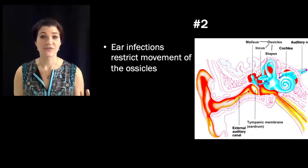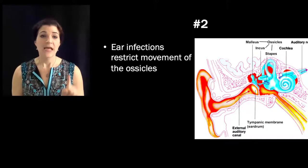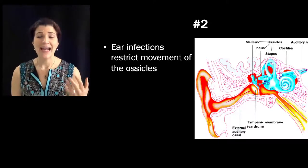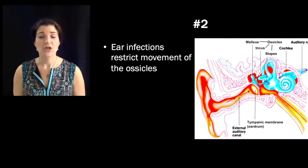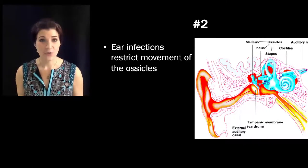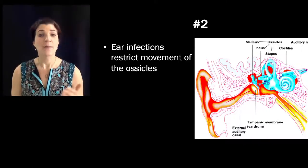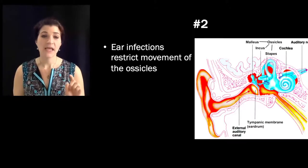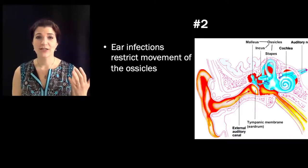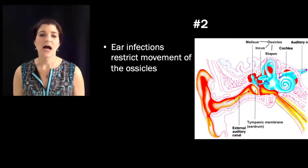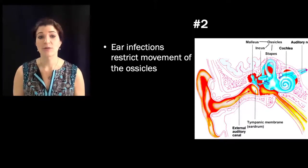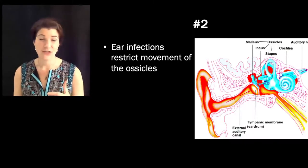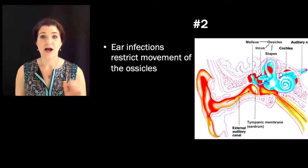When you have a cold or an ear infection, sounds often sound more muffled than normal. This happens because the area surrounding the ossicles can get inflamed and full of mucus, which hampers how much the ossicles can move — so rather than nice big movements, the ossicles are cramped and sounds aren't carried as clearly from outside the head to inside. This can also happen from other forms of external damage, like having a perforated or torn eardrum, meaning the tympanic membrane doesn't move the way it normally would. We'll talk more about noise-induced hearing loss, ringing in your ears, age-induced hearing loss, and other forms of damage to the auditory system a bit later.